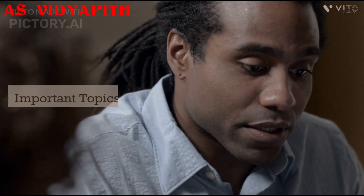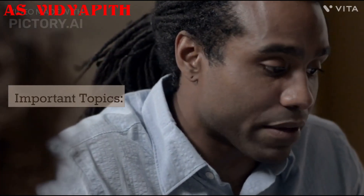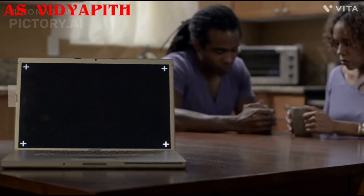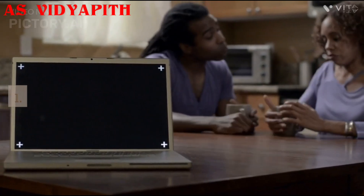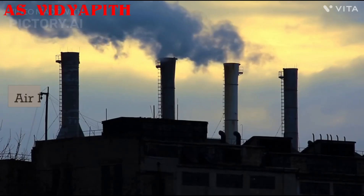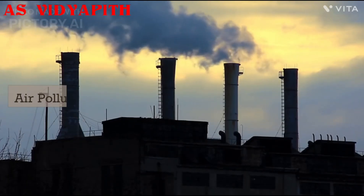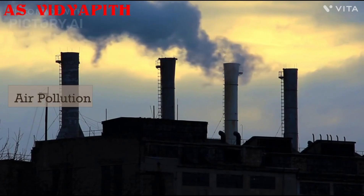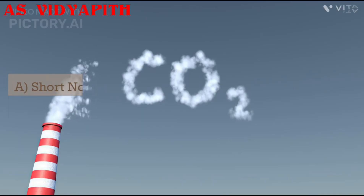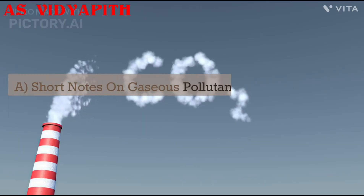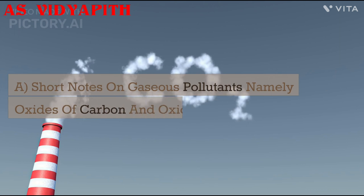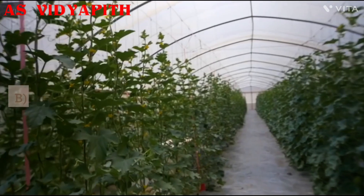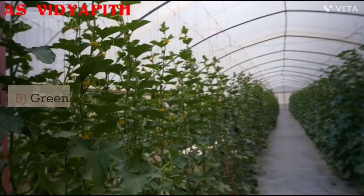Chapter 14: Environmental Chemistry. Important Topics: 1. Air Pollution. a. Short Notes on Gaseous Pollutants — namely Oxides of Carbon and Oxides of Nitrogen. b. Greenhouse Effect.